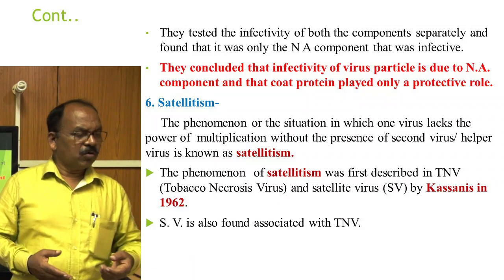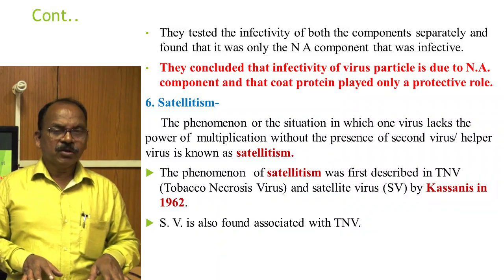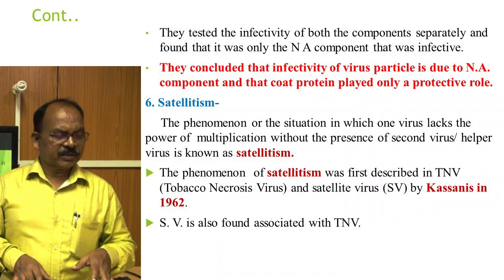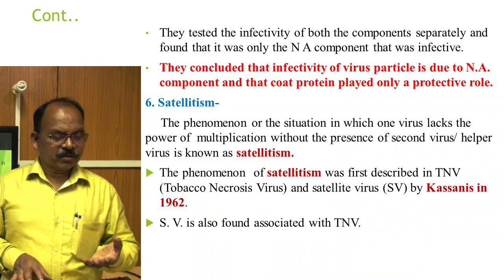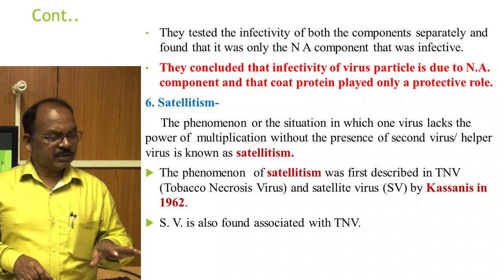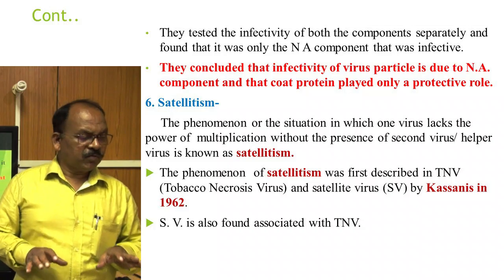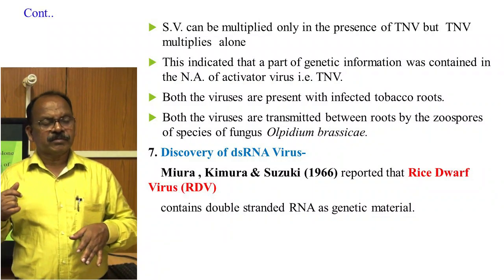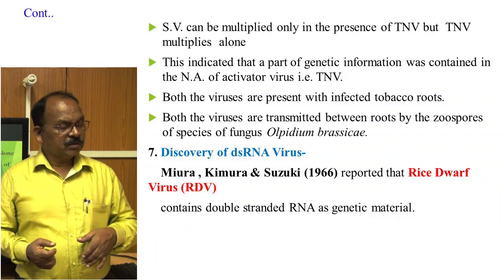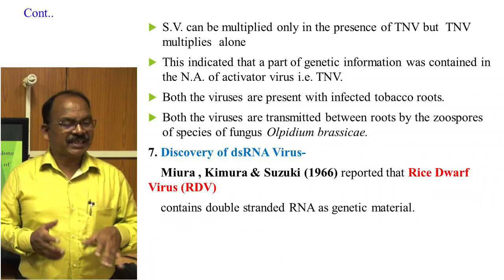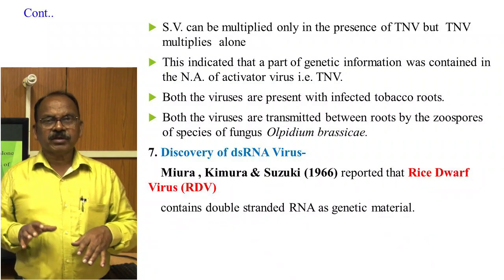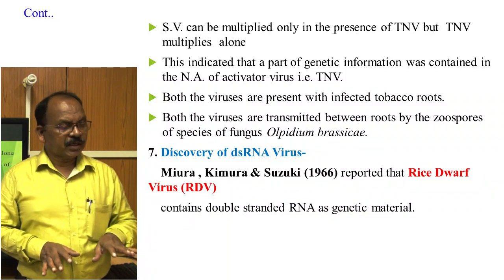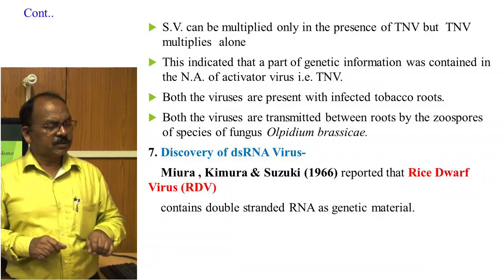Satellitism: The phenomenon in which one virus lacks the power of multiplication without the presence of a second or helper virus is known as satellitism. This phenomenon was first described in Tobacco Necrosis Virus and Satellite Virus by Kassanis in 1962. The satellite virus can be multiplied only in the presence of Tobacco Necrosis Virus, but Tobacco Necrosis Virus multiplies alone. This indicated that part of the genetic information was contained in the nucleic acid of the activator virus. Both viruses are transmitted between roots by the zoospores of a species of the fungus Olpidium brassicae.